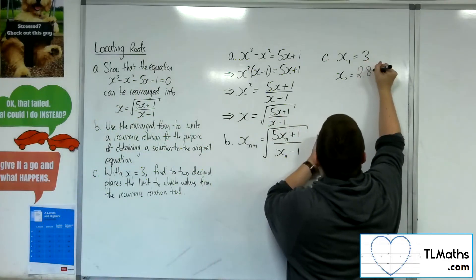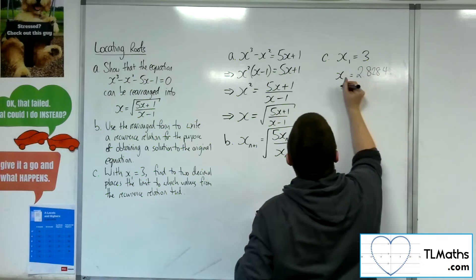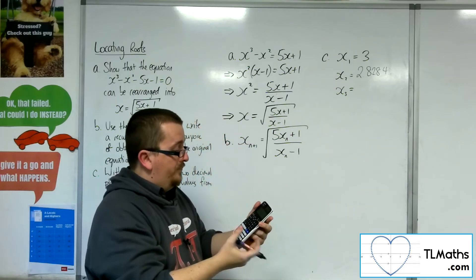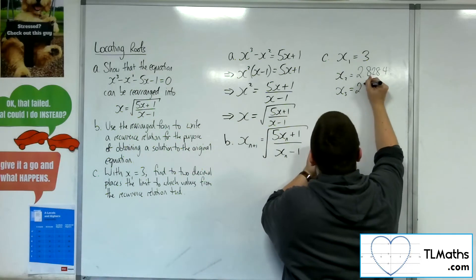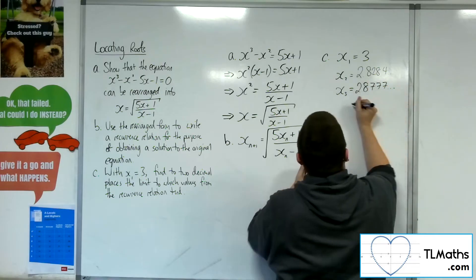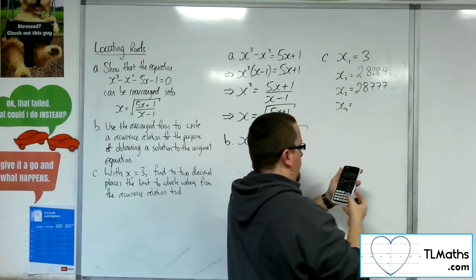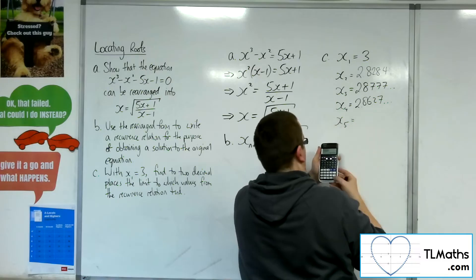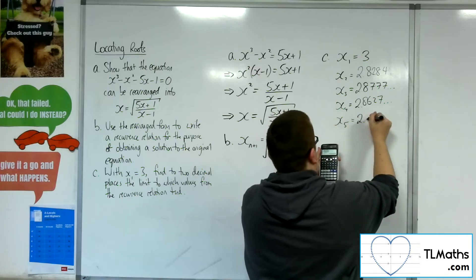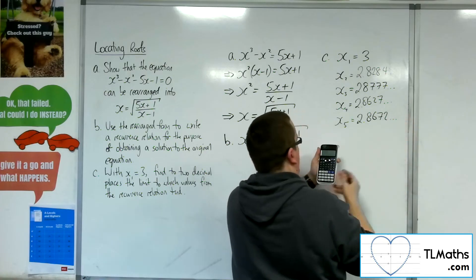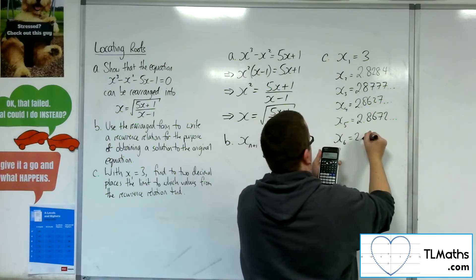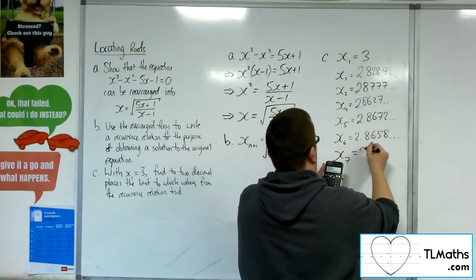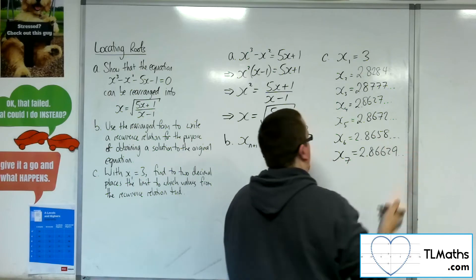Press equals and I get 2√2, which is 2.8284... then pressing equals again gives 2.8627. Press equals again: 2.8672. Press equals again: 2.8658. One more: 2.8663.